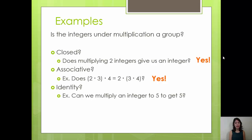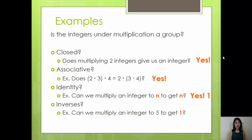Our next question is, do we have an identity? Can we multiply an integer by 5 to get 5? Yes — our identity here is 1. Generalizing: can we multiply an integer by n to get n? Yes, we use 1. So we do have an identity for all of our elements. Now let's talk about inverses. Can we multiply an integer by 5 to get 1? The number we're looking for is 1/5. However, 1/5 is not an integer, meaning it's not in our group. Therefore, we do not have inverses for all of our elements. Because we've broken that property, the integers under multiplication is not a group.